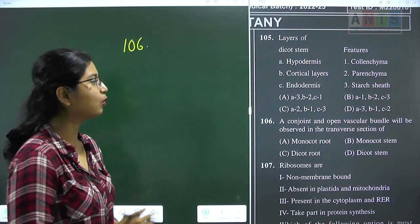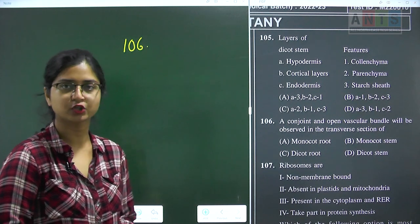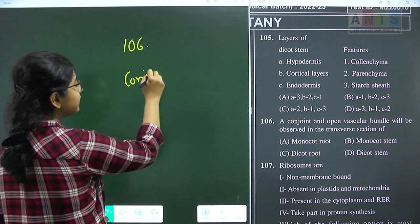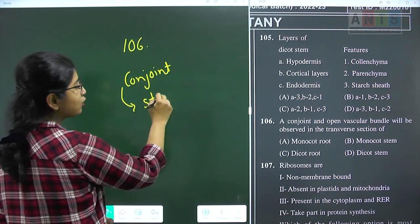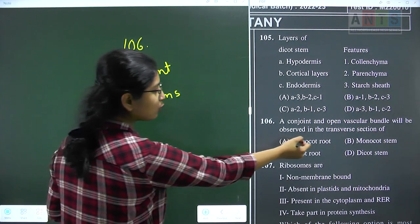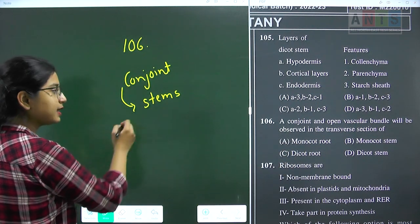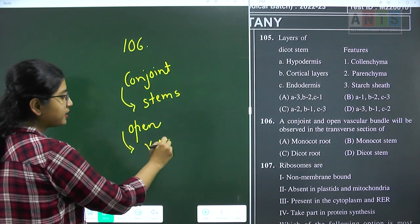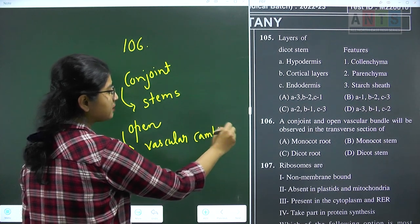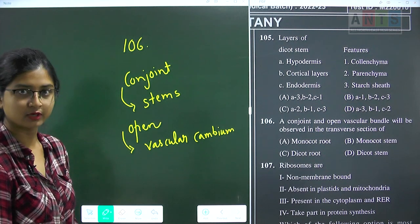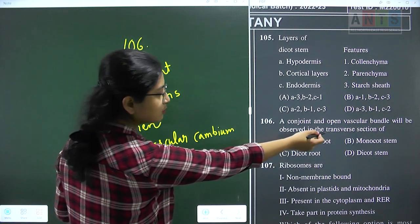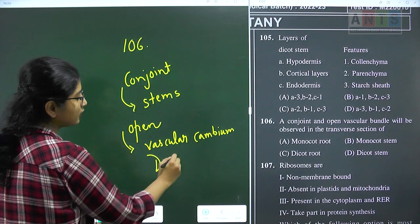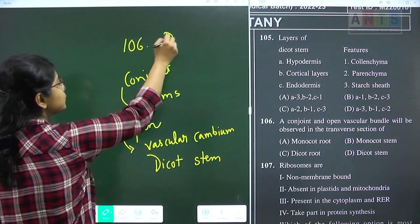Question 106: a conjoint and open vascular bundle will be observed in the transverse section of which structure? A conjoint vascular bundle is a property of stems, not roots — so monocot root and dicot root are eliminated. Open means the presence of vascular cambium, enabling secondary growth, which is a property of dicot plants. So the monocot stem is also eliminated. A conjoint open condition is a property of a dicot stem. Question 106 answer is option D.